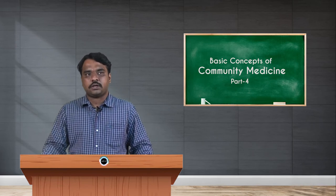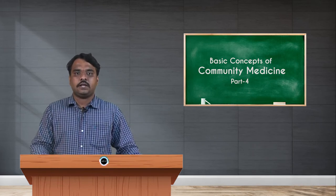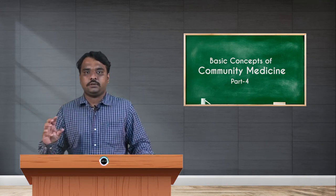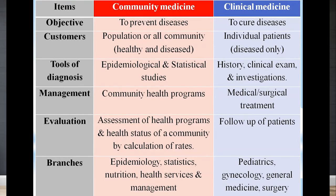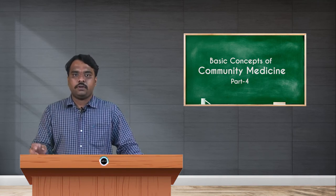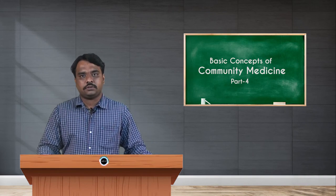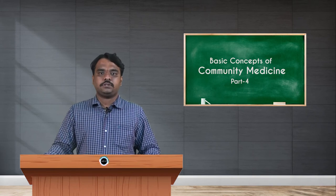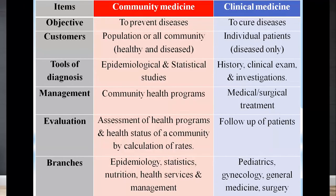Coming to tools and diagnosis, what we see in community medicine involves epidemiological and statistical studies — including birth, morbidity, and mortality rates, and how many in a population are affected. Depending on all these things, a proper graphical presentation is made to eradicate the specific disease. Whereas in clinical medicine, the tools of diagnosis involve taking a detailed history of the patient, performing clinical examination, and conducting respective investigations to rule out a proper diagnosis.